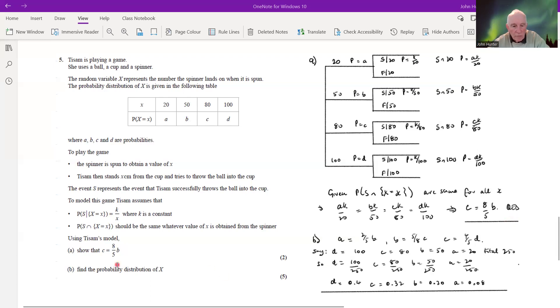Right, and then it goes on to say find the probability distribution of x. Well, what do we know? We've got all these relationships here. We also know that a plus b plus c plus d are going to add up to one, so we've got a bit of a system of equations here.